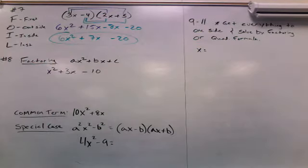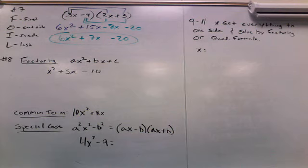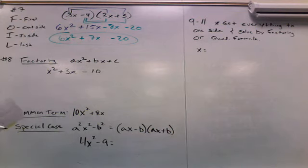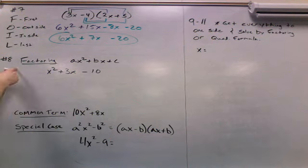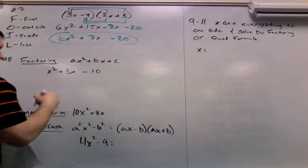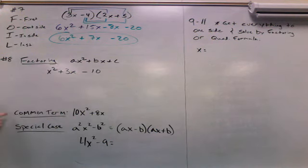That's the full ax squared plus bx plus c form of these two polynomial factors. Next, number 8 says factor — rewrite these as polynomial factors. There are three types of factoring: factoring ax squared plus bx plus c, common term factoring, and special case factoring. We're going to work through all three.